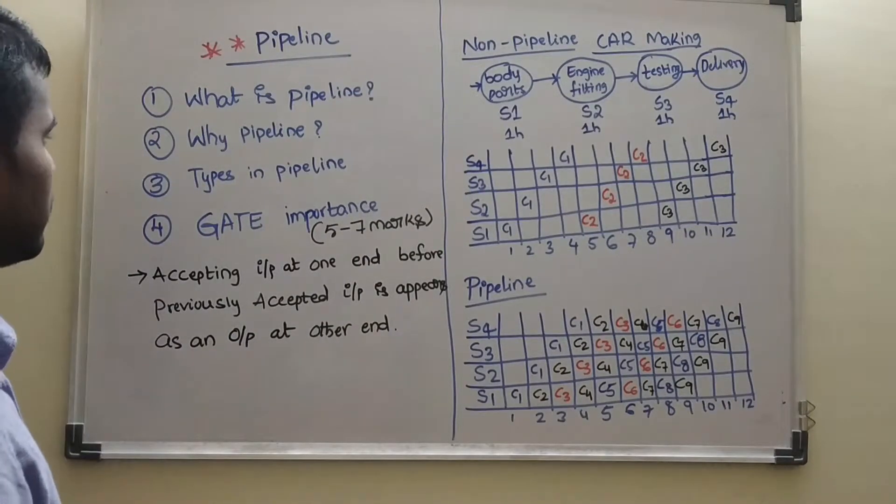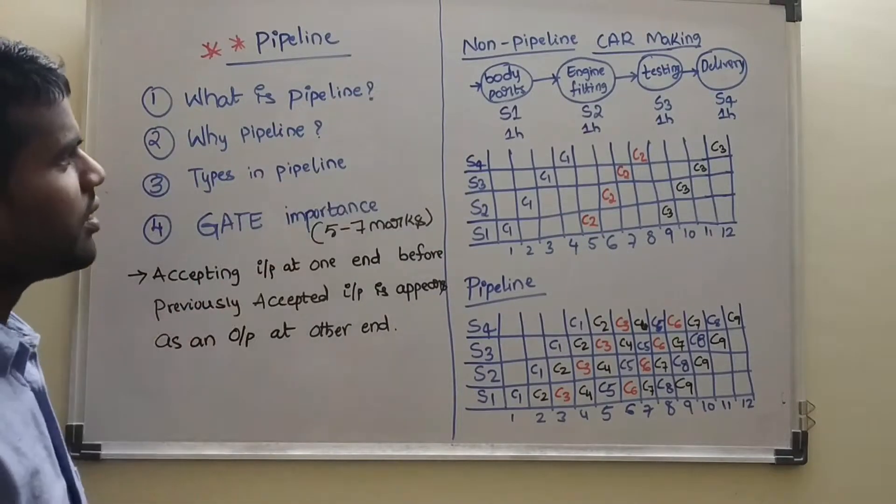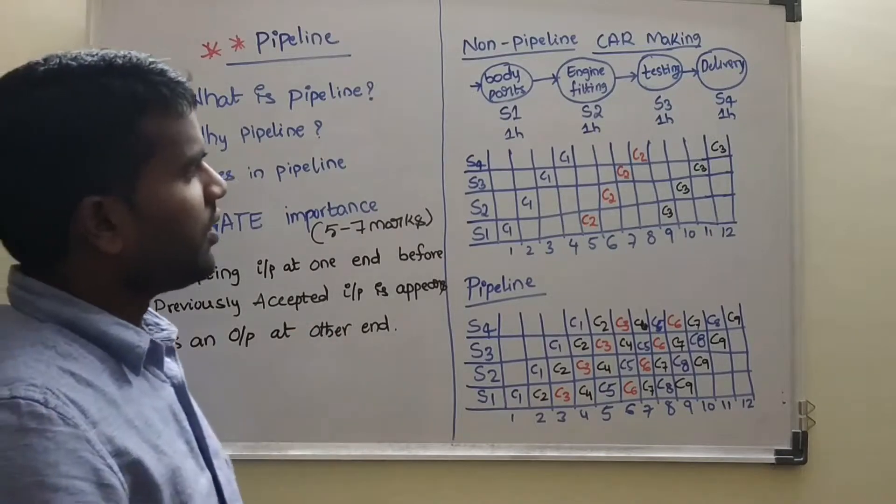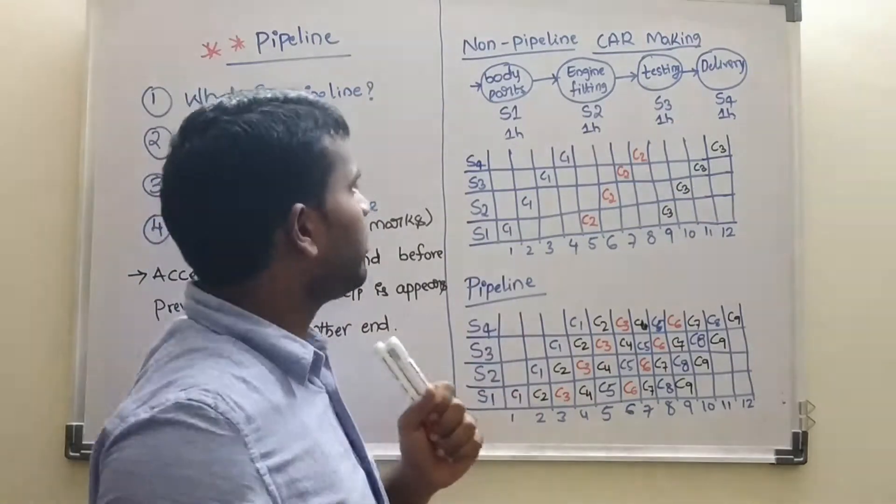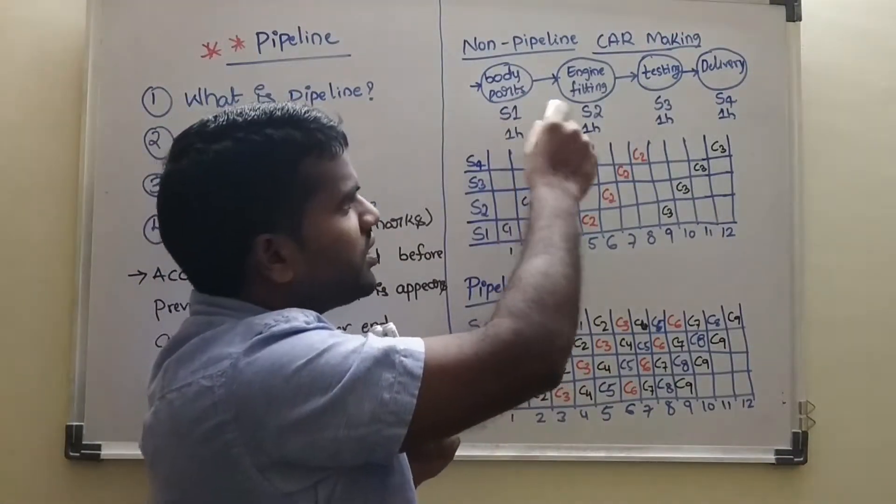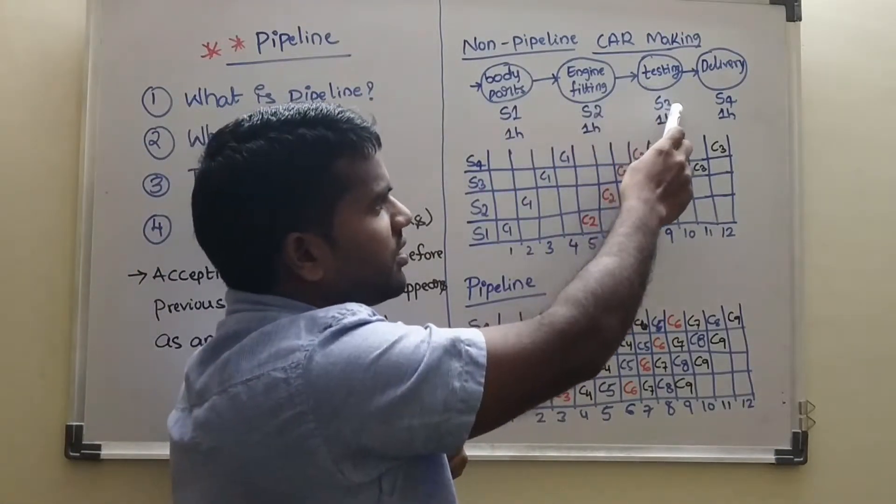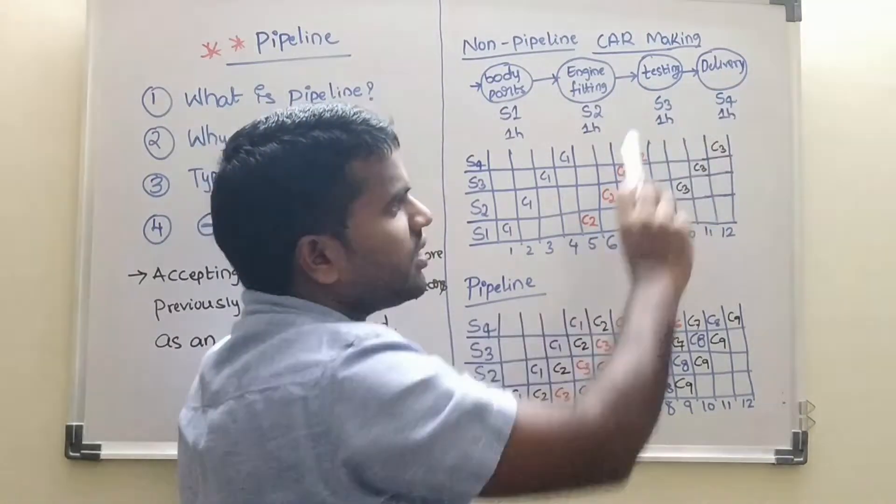So why pipeline? We will see here. In non-pipeline, we will take it a car making process. In non-pipeline, this is the stage 1, this is stage 2, this is stage 3 and this is stage 4.